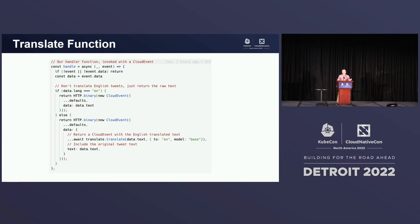Let's take a look at the code. Here's our translate function. It's pretty simple — just a little bit of JavaScript. It receives a cloud event, and as the data for that event we have the tweet. This is coming directly from the Camel K Camlet. We check to see if the tweet text is in English. If it is in English, we just return a new cloud event with the body of the tweet text as our data. If it's not in English, we call the Google Translate API and return the results of that as the data for our cloud event, as well as the original tweet text.